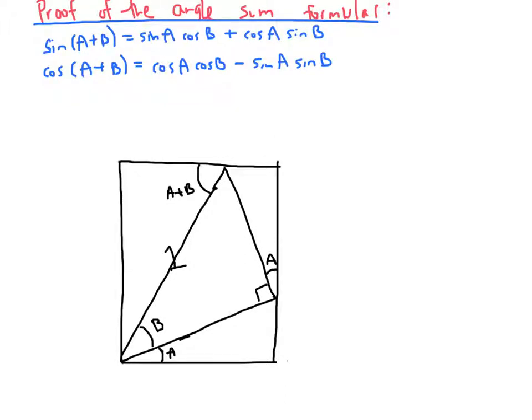Next, let's figure out as many side lengths as we can. Based on the middle right triangle with hypotenuse one, we know that this side length down here must be cosine of B, since adjacent over hypotenuse is cosine B. Similarly, this side length here must be sine of B, since opposite over hypotenuse is sine of B.